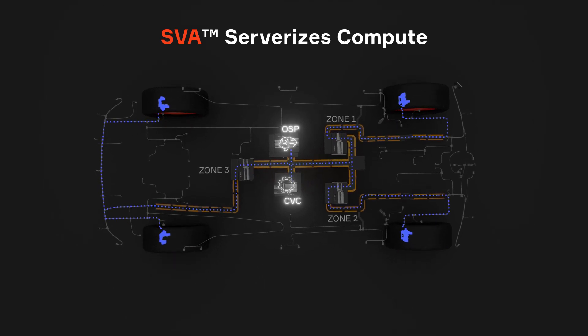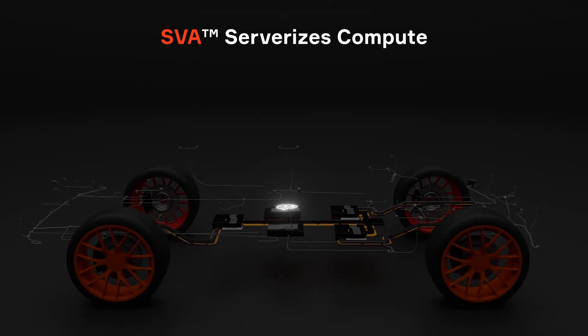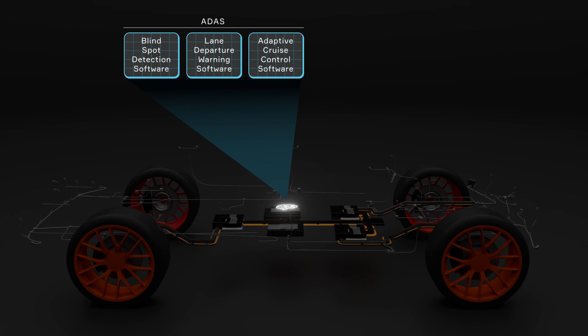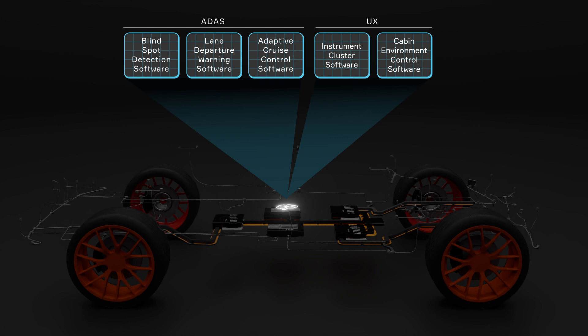The third principle is that SVA serverizes compute. With hardware abstracted, higher-level ADAS software can now focus on making driving decisions, and UX software can focus on improving the in-cab and user experience.